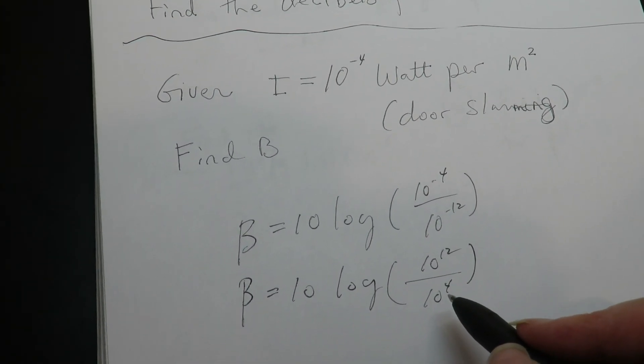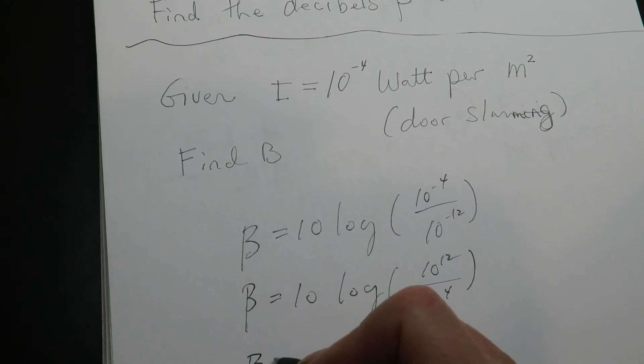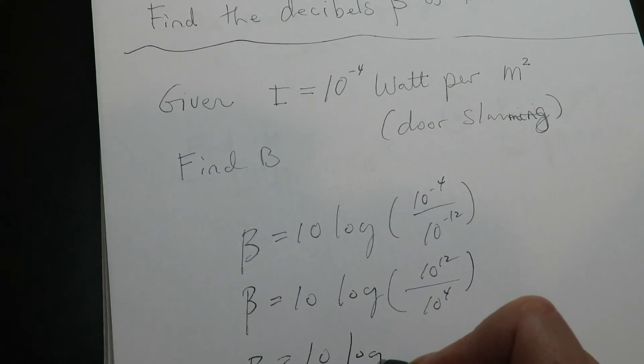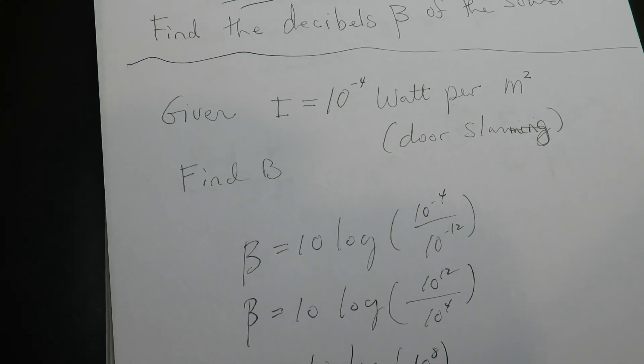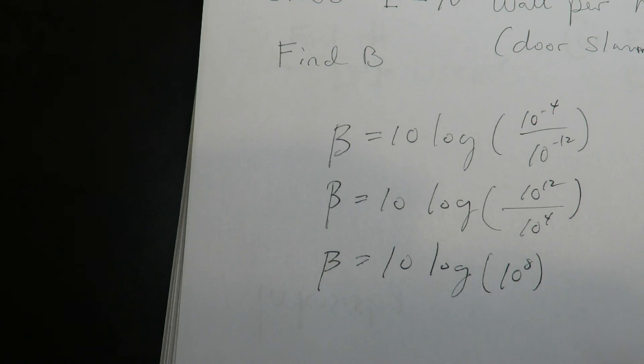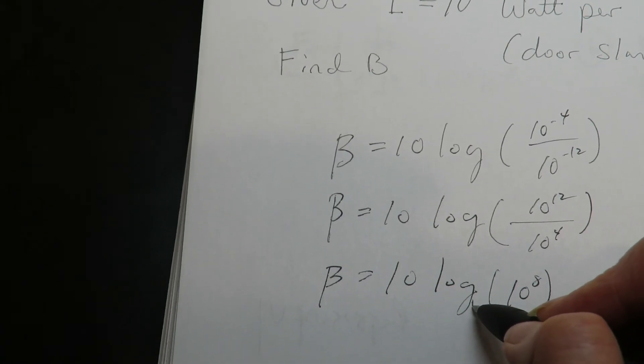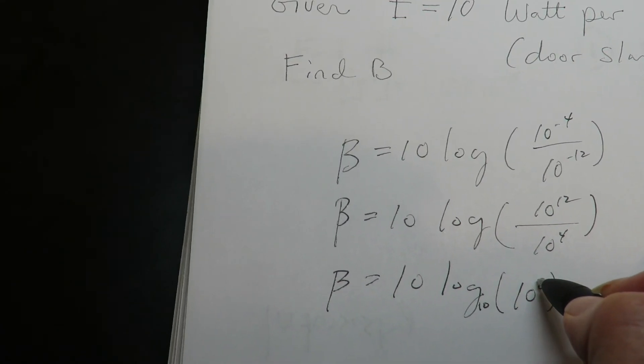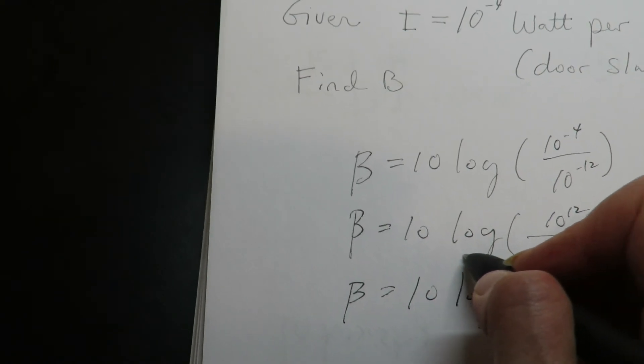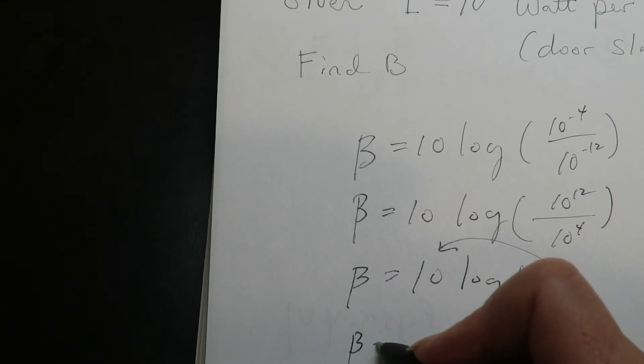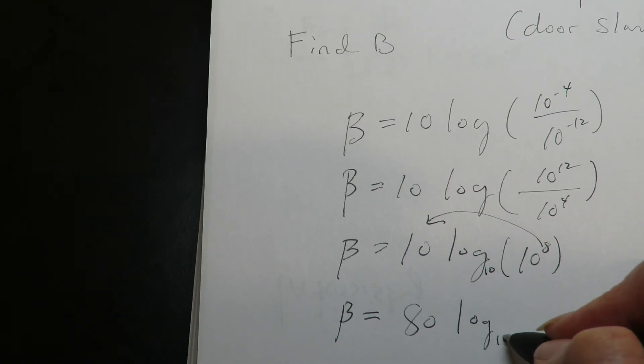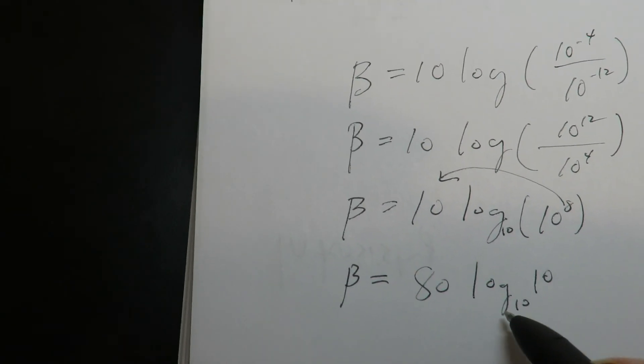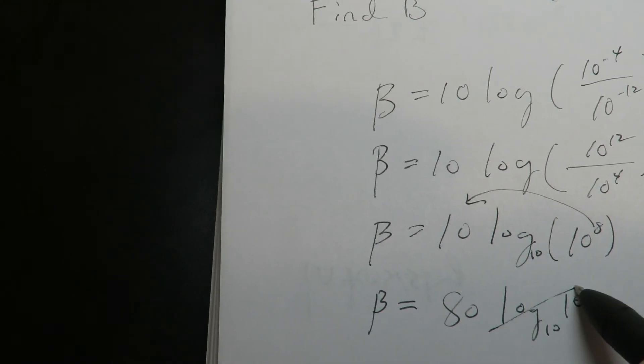They're both base 10, which means you can reduce them. So they're going to reduce to be 10 raised to the 8th power. You can do this one totally by hand. So you can use, since this is base 10 and this is raised to a 10, you can use your log property of bringing the exponent in front, which would make this 80 log base 10 of 10. And whenever these match, that goes to 1.